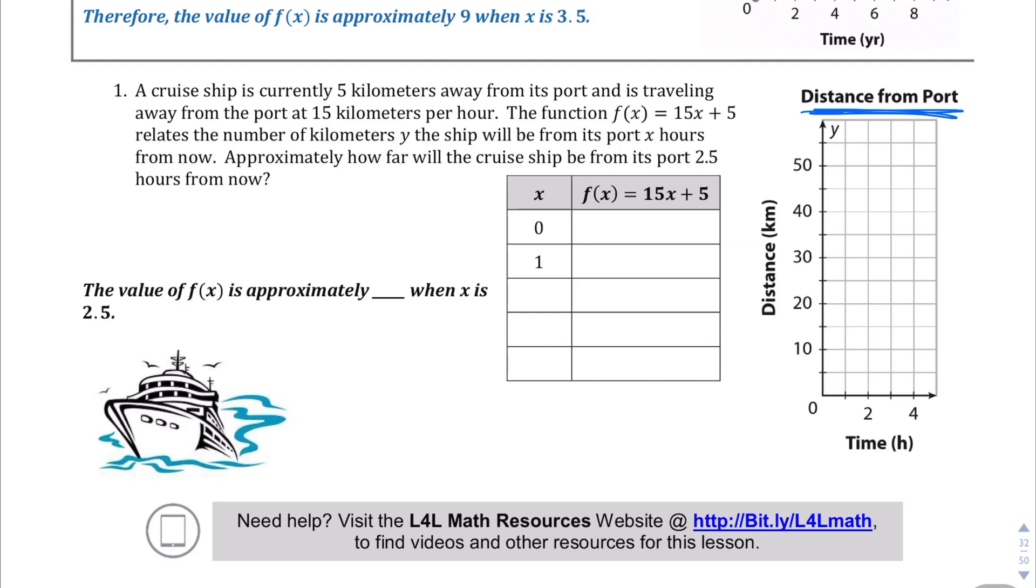The function f(x) = 15x + 5 relates the number of kilometers the ship will be from its port x hours from now. Approximately how far will the cruise ship be from its port two and a half hours from now? So we want to know at around the two and a half hour mark how far the ship is going to be from the port.